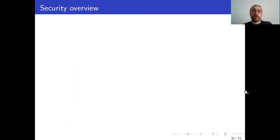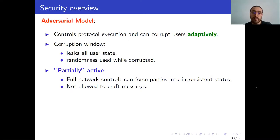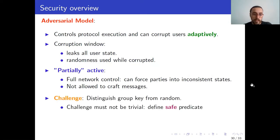Now, let me just mention a few words on security before finishing. So to start, let me describe the threat model that we consider. So we consider an adversary that controls the protocol execution and can corrupt users adaptively. Moreover, corruptions take place during a window during which all the user state leaks, as well as the randomness used during this window. Third, the adversary is partially active, meaning that they have full network control and can force parties to inconsistent states, but we do not allow them to craft messages. And since we assume implicit authentication, what this means is that they cannot corrupt the user and send messages in their name. And of course, security is defined in terms of a challenge where the adversary must distinguish a real group key from a random one. And we must ensure that this challenge is not trivially solvable from one of the corrupted keys, so we must define a safe predicate.